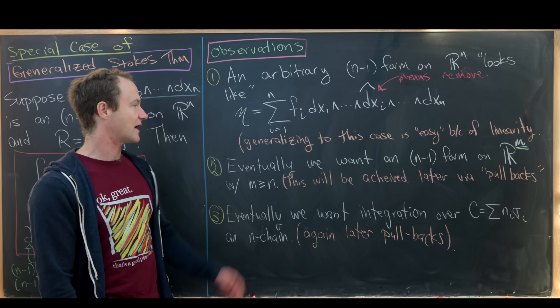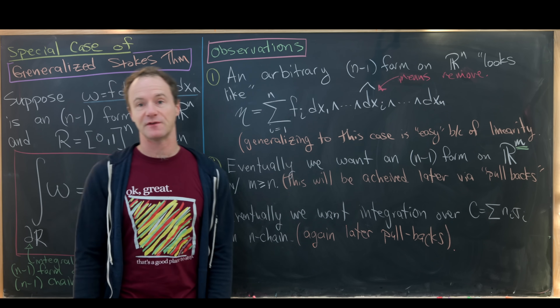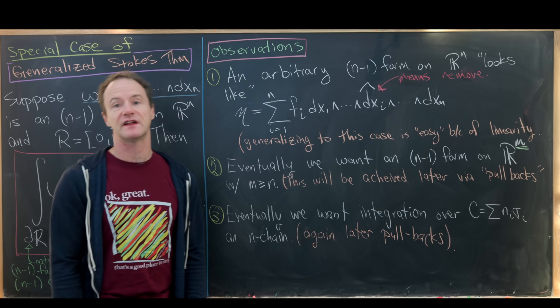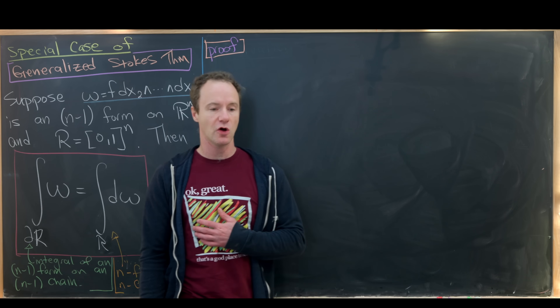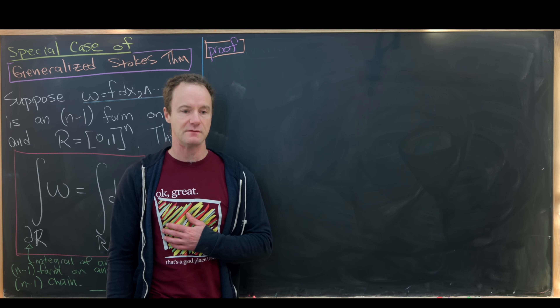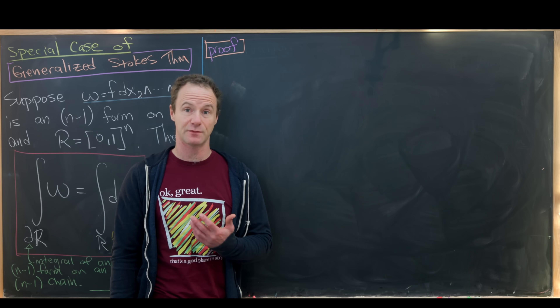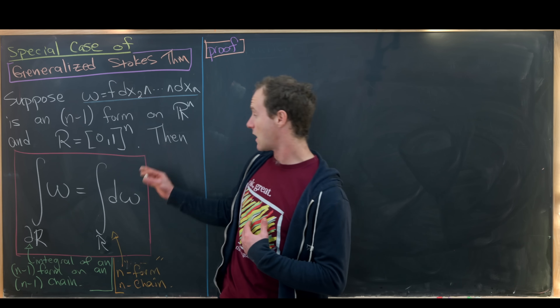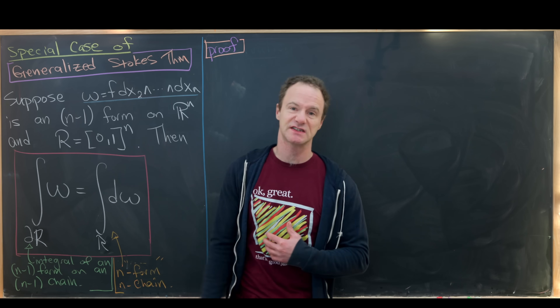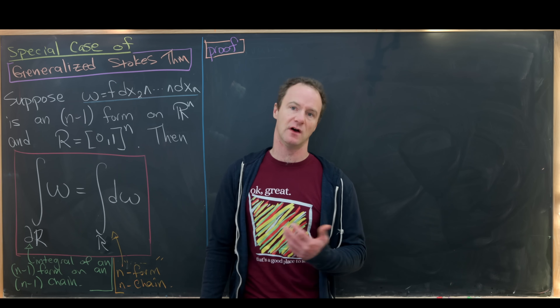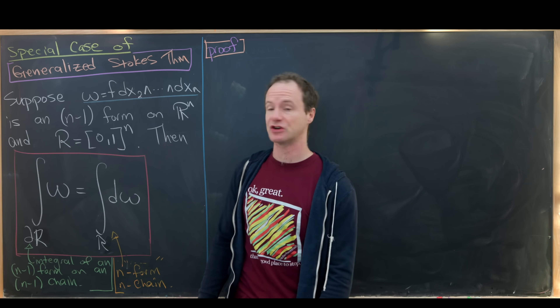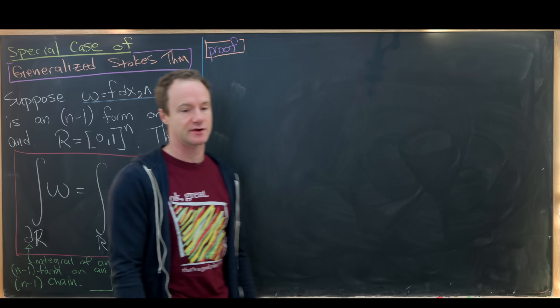Now that we've looked at these observations and we see what we need to prove, let's jump into the proof. I hope we've appropriately motivated the simplifications that we've made. Now we're going to jump into this special proof of this case of the generalized Stokes theorem.